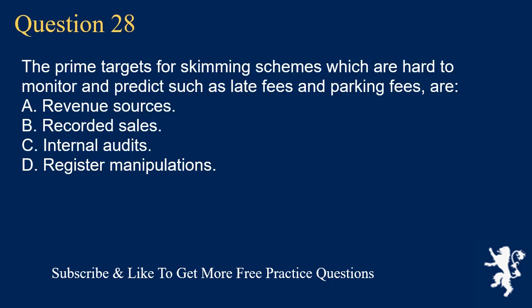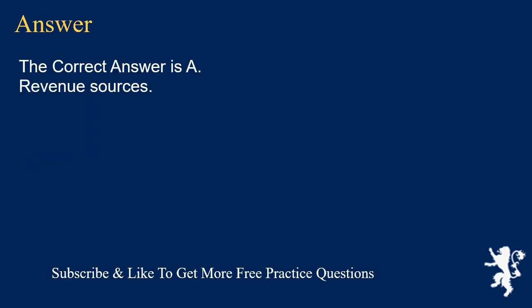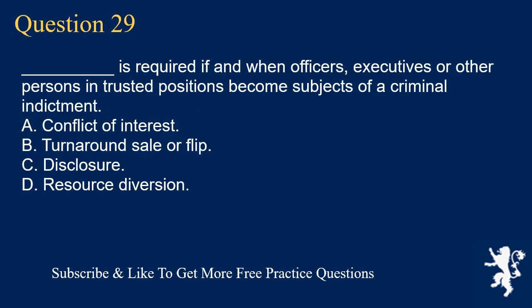Question 28: The prime targets for skimming schemes, which are hard to monitor and predict, such as late fees and parking fees, are: A. Revenue sources. B. Recorded sales. C. Internal audits. D. Register manipulations. The correct answer is A. Revenue sources.